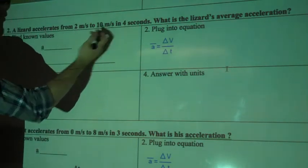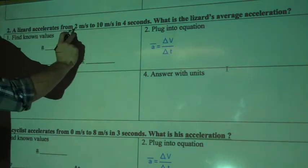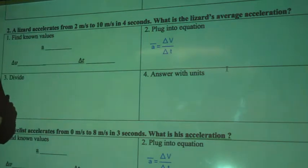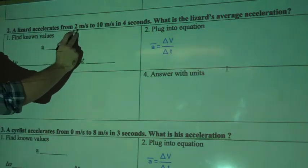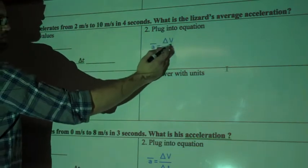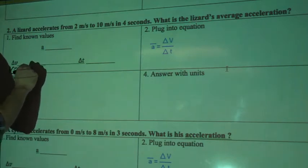So what I know is meters per second is a measurement of velocity. And we want to know he's accelerating from 2 to 10. So I'm going to find the difference between these two. I want to find the change in velocity. So I'm going to write down 10 meters per second minus 2 meters per second.